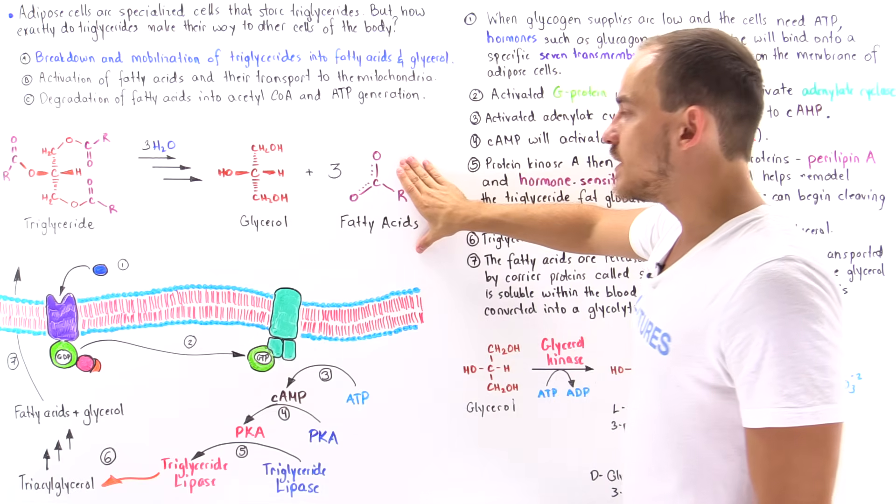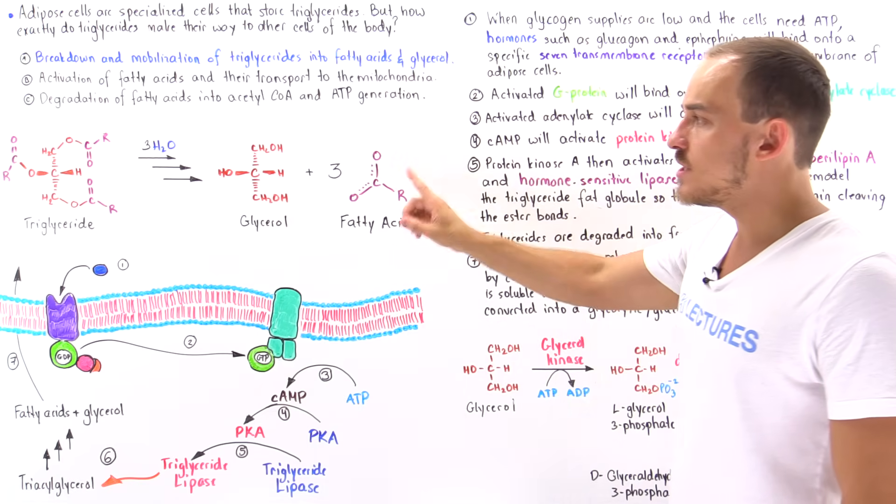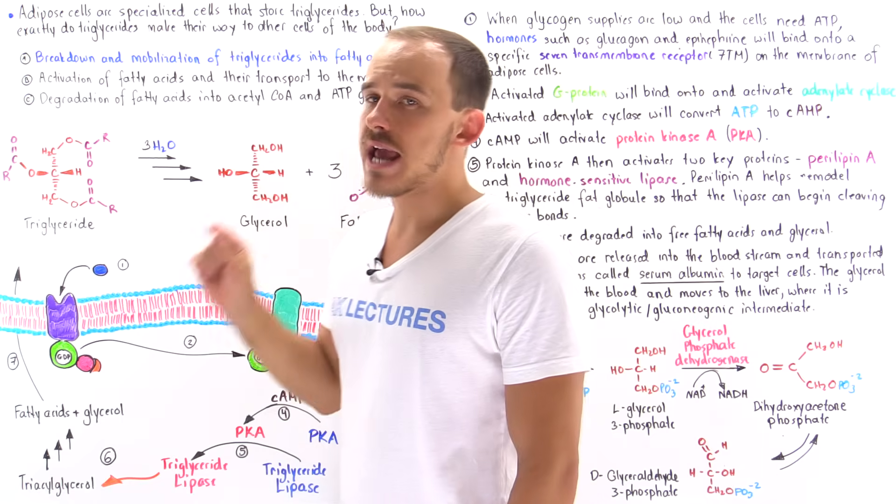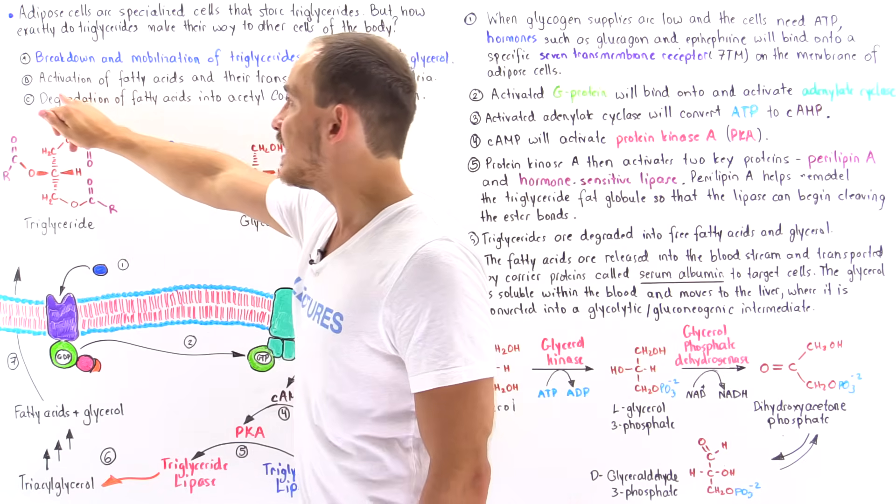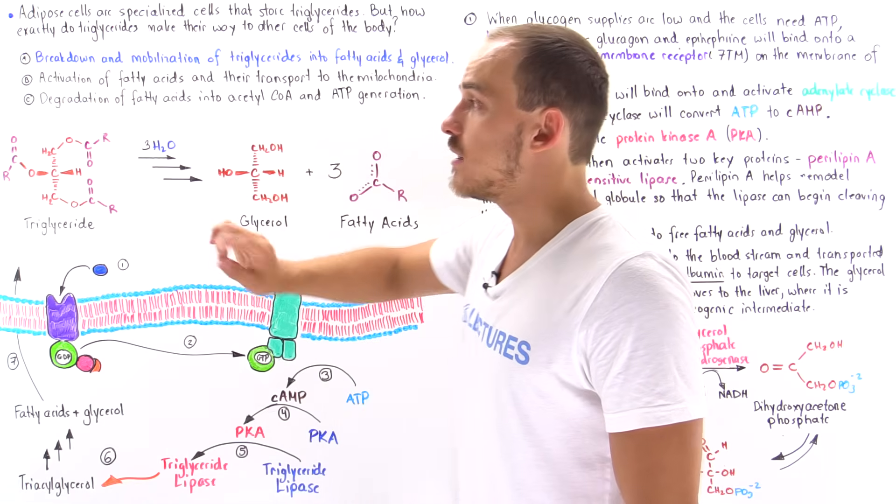Now, what happens to the fatty acids? This is what I'd like to focus on in the next lecture. In the next lecture, we're going to discuss how these fatty acids are activated within the target cell and then transported into the matrix of the mitochondria of that target cell.